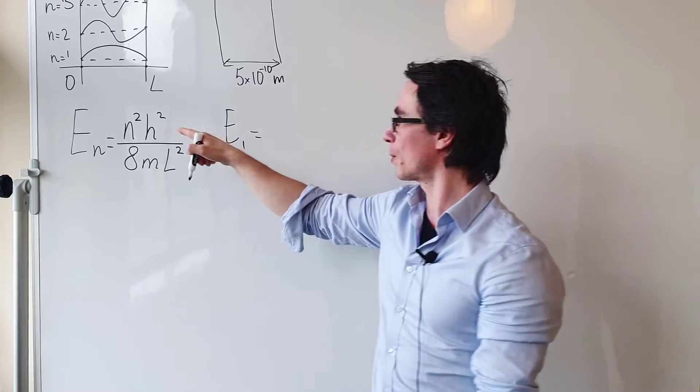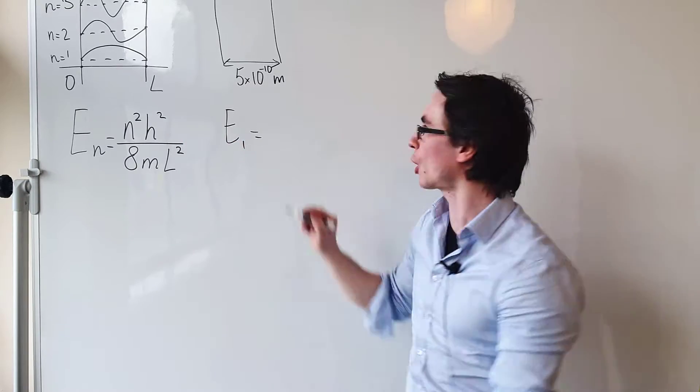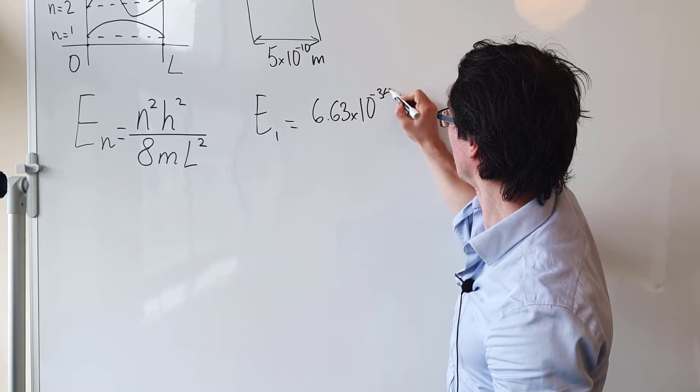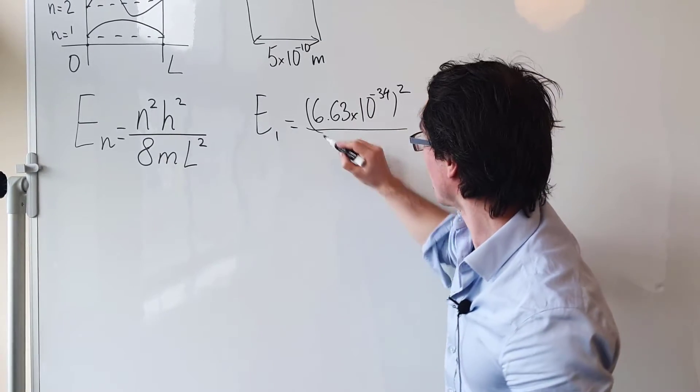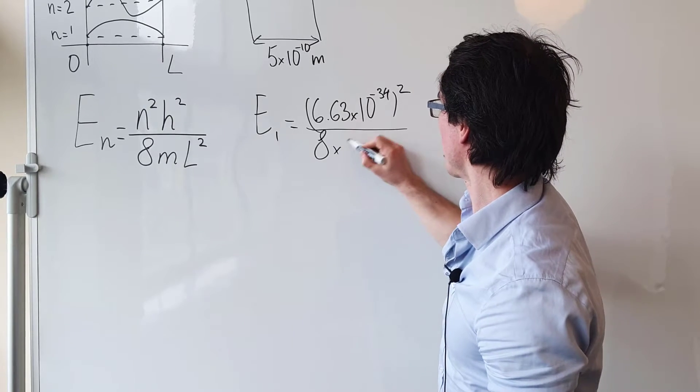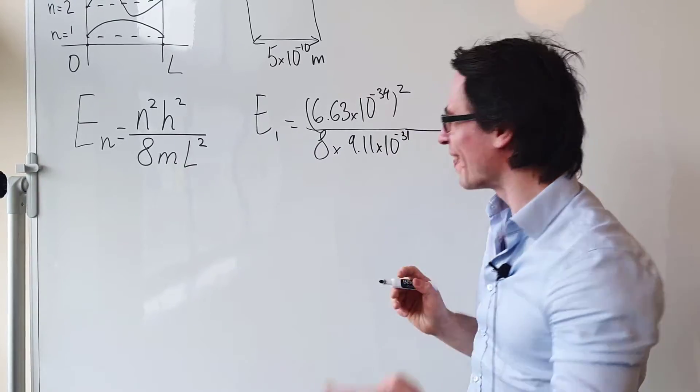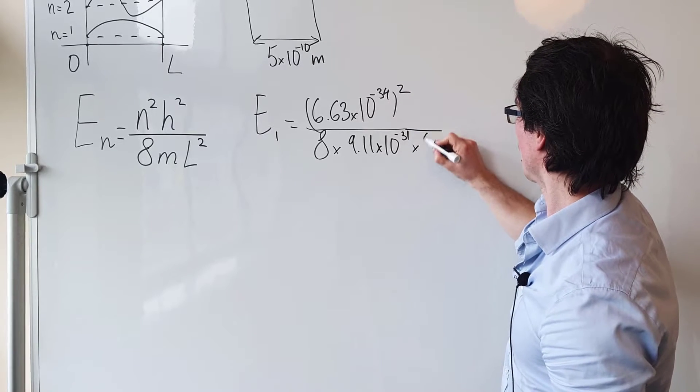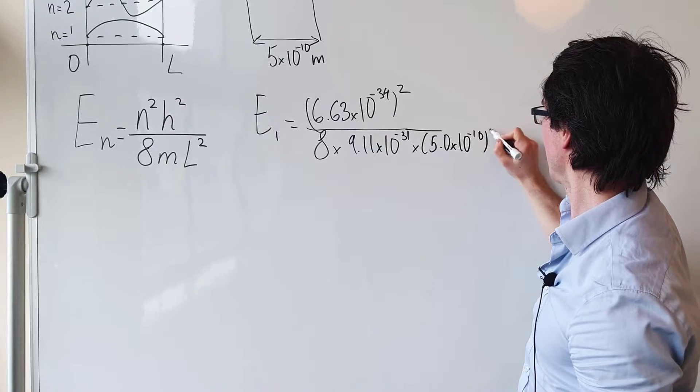Our first energy level will be equal to one squared, which is just one times H, Planck's constant. So this will be 6.63 times 10 to the power of minus 34, and this expression is squared. We're dividing that by 8 times M, where M is the mass of an electron, which is about 9.11 times 10 to the power of minus 31, and then we're multiplying by L squared, which is 5.0 times 10 to the power of minus 10 squared.